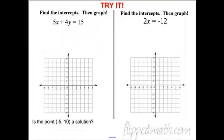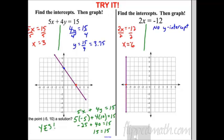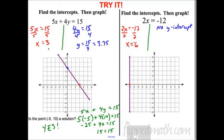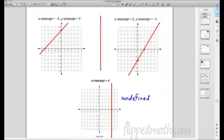Now go ahead and pause it, try these two problems. Find the x- and y-intercepts and graph them — the one on the left even has a little point for you to find. Here are the answers: the x-intercept is 3, the y-intercept is 4, or 3.75 — I took a fraction and made a decimal. Is the point a solution? Yes — replace x and y, plug them in, 15 = 15, so it's on the line. For the problem on the right, there's only an x-intercept at negative 6, there is no y in the problem, so there's no y-intercept — one of those weird vertical undefined lines.